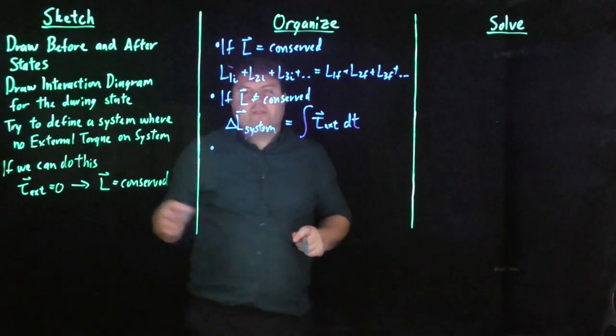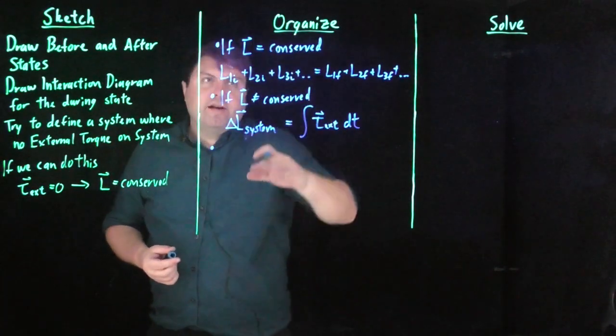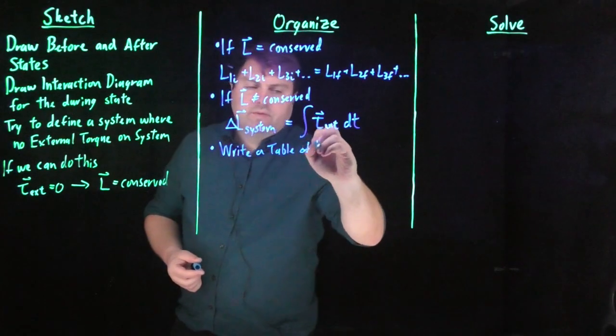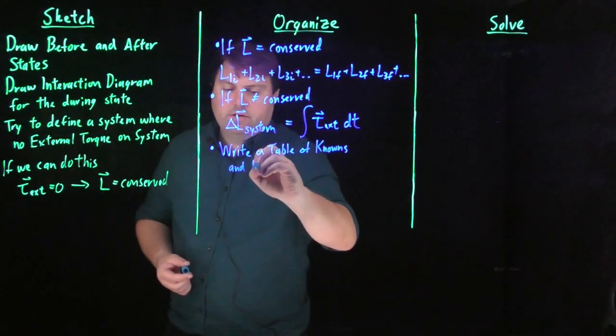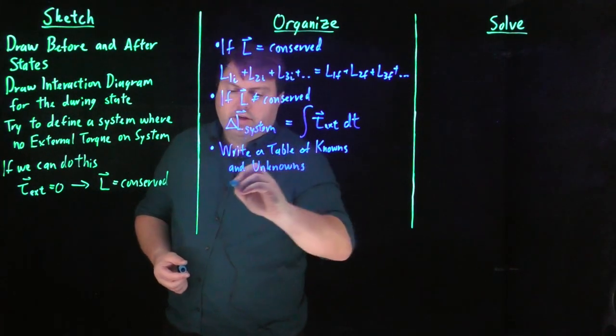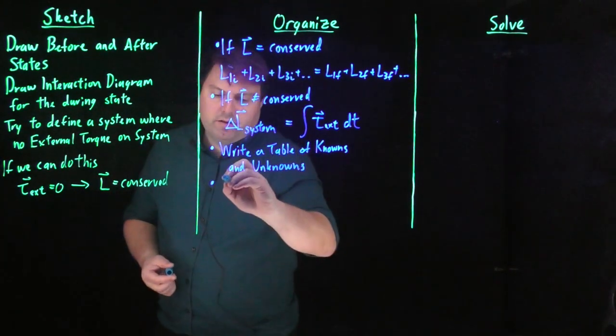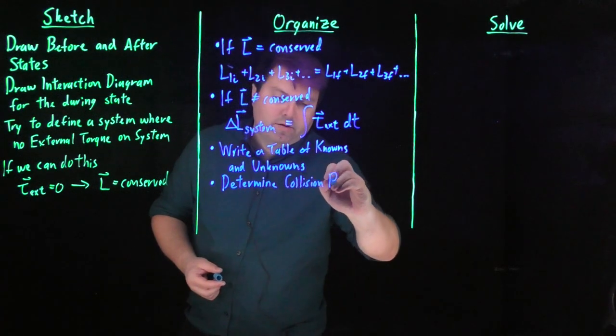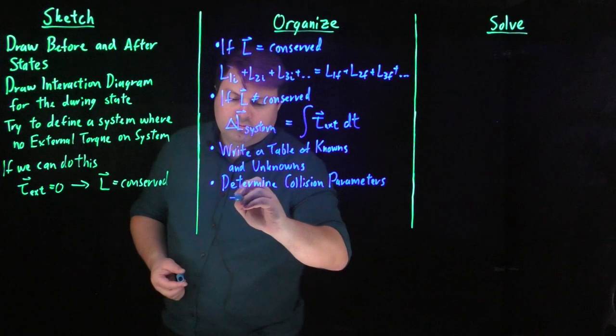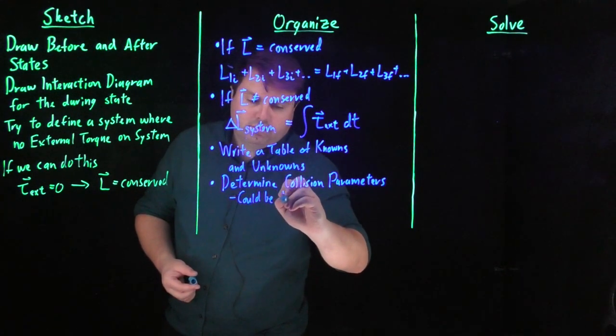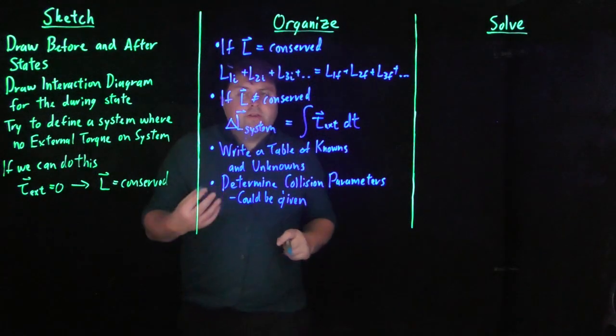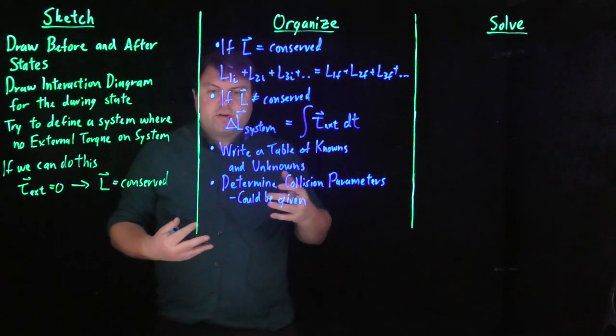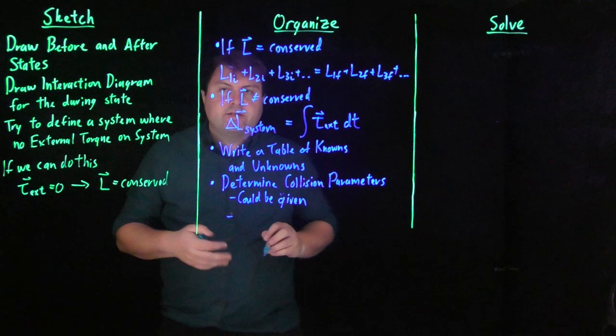So just like we've done for all of our conservation laws, just like we've done for all of our forces, once we have what we understand, we want to write a table of knowns and unknowns, and we want to determine collision parameters. So in certain cases we could be given a collision parameter such that the two angular momentums are equal but in opposite directions or such,